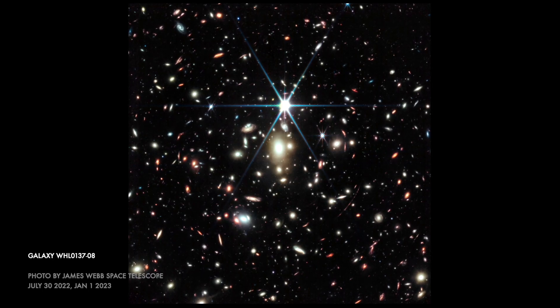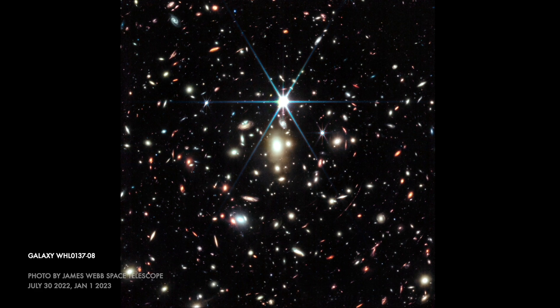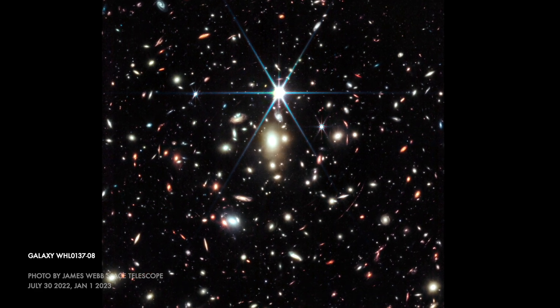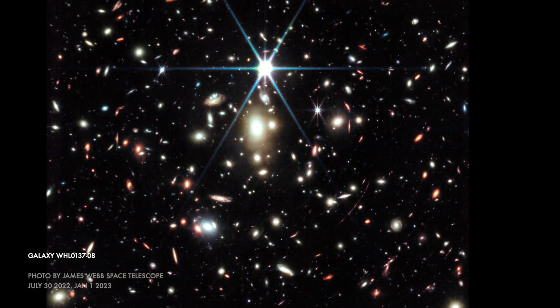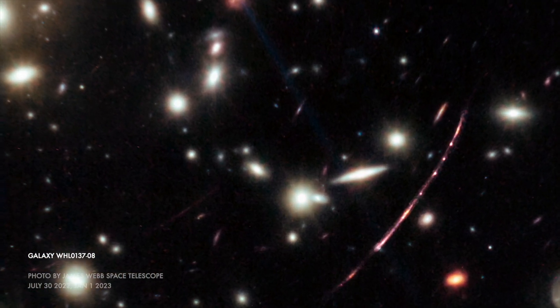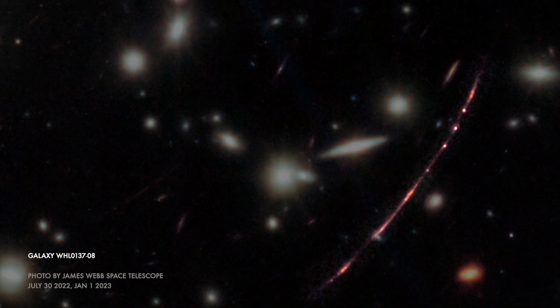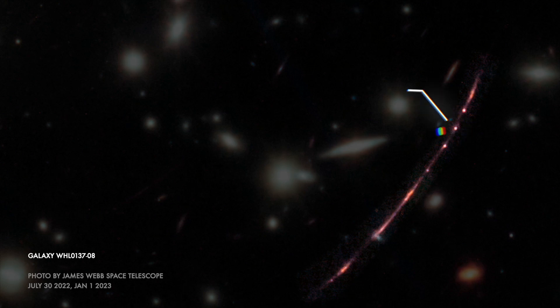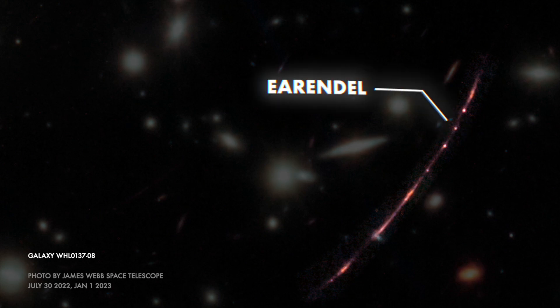I want to show you one of the most important stars we've ever found. Check out this photo that the James Webb Space Telescope took on July 30th, 2022. Do you see it? It's right here in this banana-like arc. That tiny red dot is a random, and it is the most distant star we have ever seen.